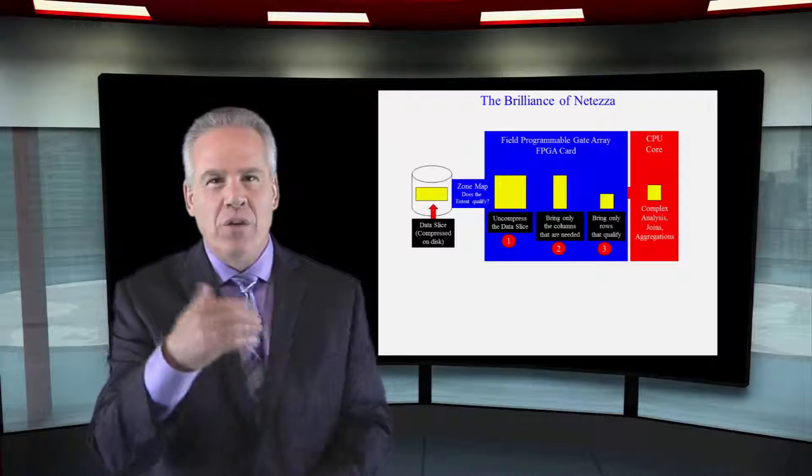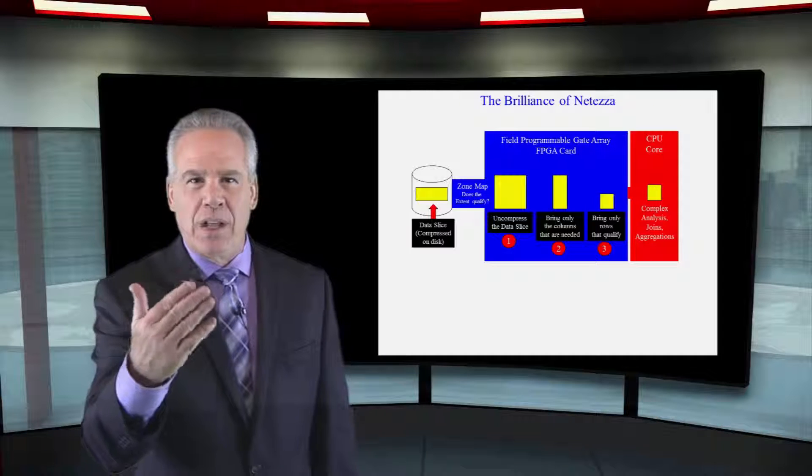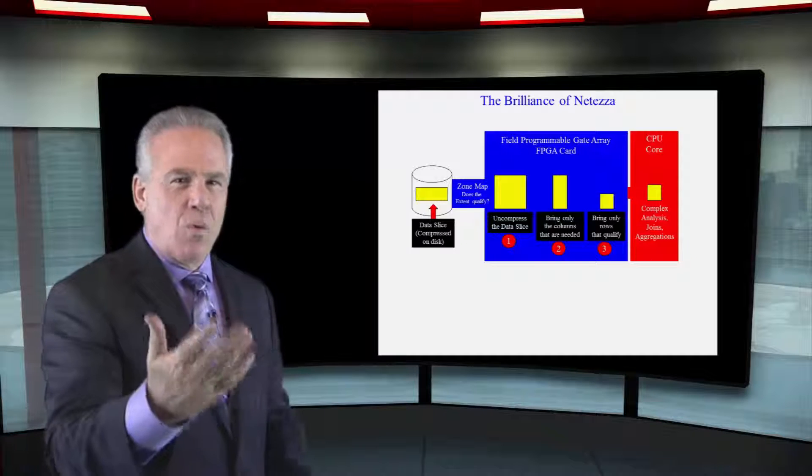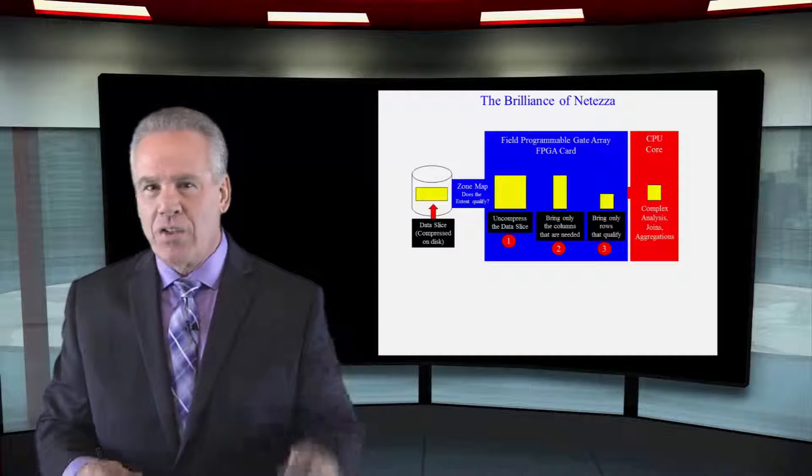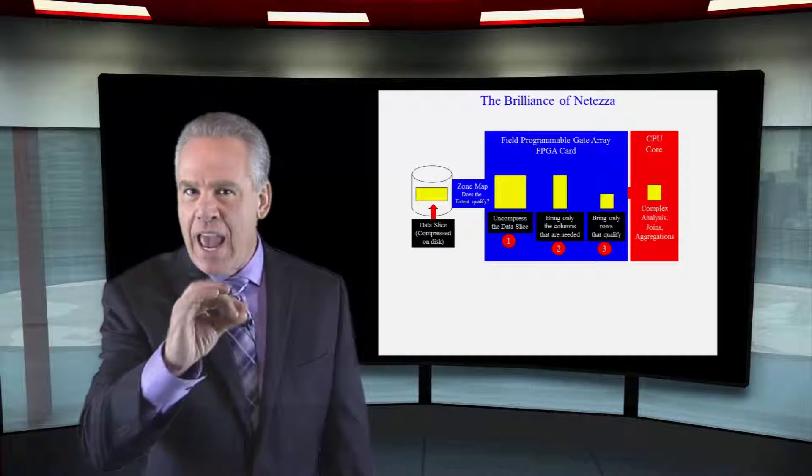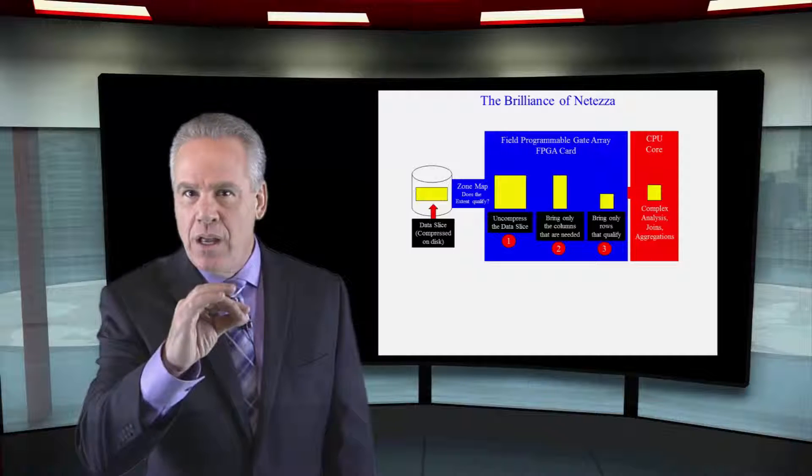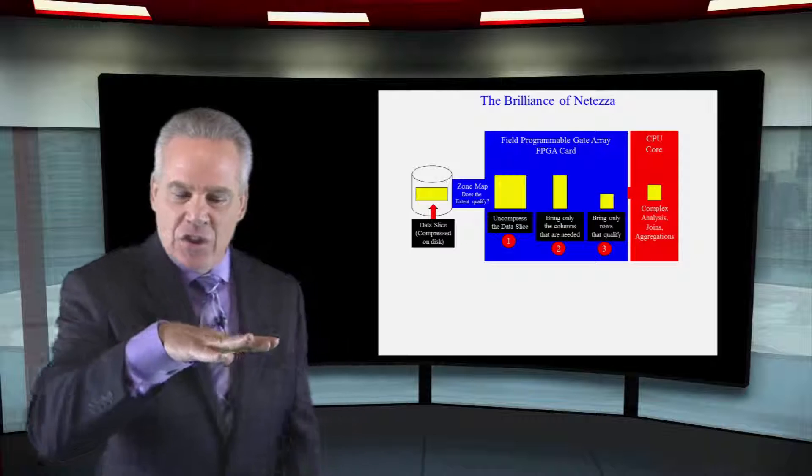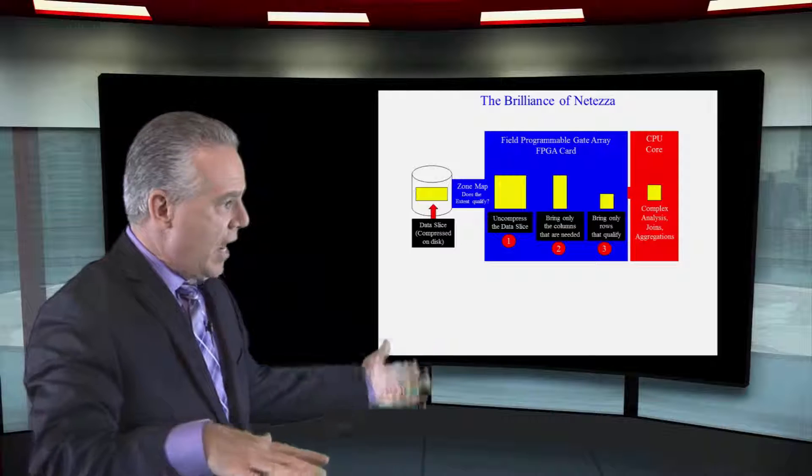When you're querying a table and say something like, 'I want to know everything where the department number equals this or the state code equals this,' that chip will have that query. It says they need the state code of Ohio, and it sits right on that chip. As the data blocks are about to come in, they put a zone map in there.